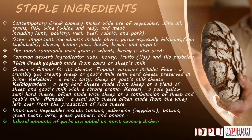Thick Greek yogurt is made from cow's or sheep's milk. Greece is famous for its cheeses. Popular varieties include: Feta — a crumbly yet creamy sheep or goat's milk semi-hard cheese preserved in brine. Kefalotiri — a hard, salty sheep or goat's milk cheese. Kefalogravio — a very hard cheese made from sheep or a blend of sheep and goat's milk with a strong aroma. Kasseri — a pale yellow semi-hard cheese, often made with sheep or a combination of sheep and goat's milk. Mizithra — a semi-soft cheese often made from the whey left over from the production of feta cheese. Important vegetables include tomato, aubergine or eggplant, potato, green beans, okra, green peppers, and onions. Liberal amounts of garlic are added to most savory dishes.